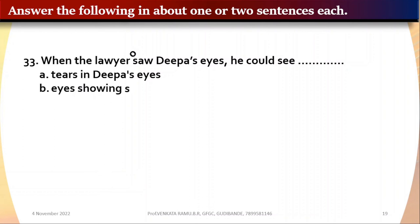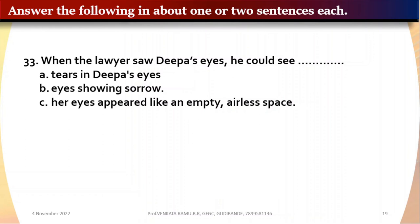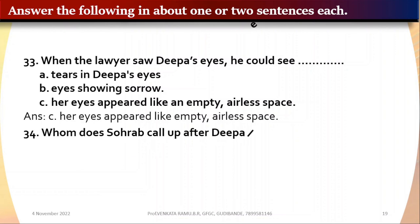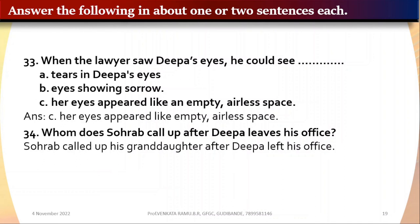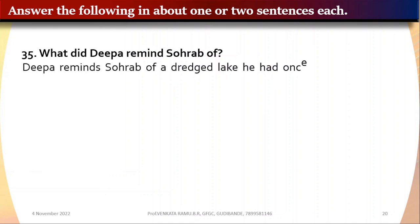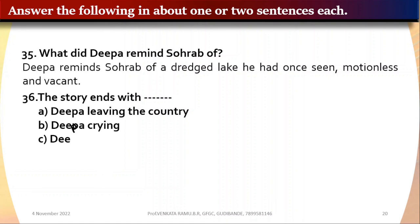Question 33: When the lawyer saw Deepa's eyes he could see blank — option A: tears in Deepa's eyes, option B: eyes showing sorrow, option C: her eyes appeared like an empty airless space. The answer is C — her eyes appeared like empty airless space. Question 34: Whom does Saurabh call up after Deepa leaves his office? Saurabh called up his granddaughter. Question 35: What did Deepa remind Saurabh of? Deepa reminded Saurabh of a dried lake he had once seen, motionless and vacant.